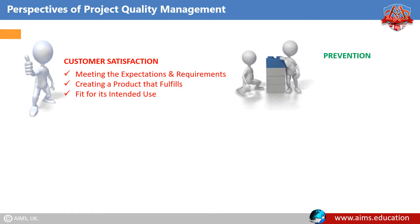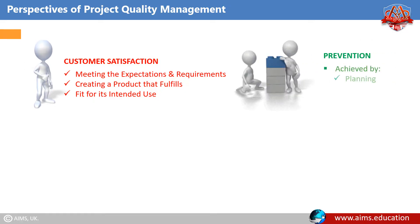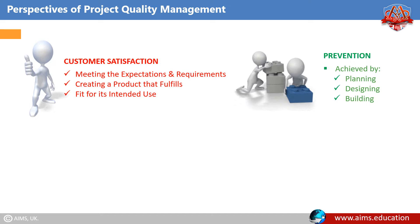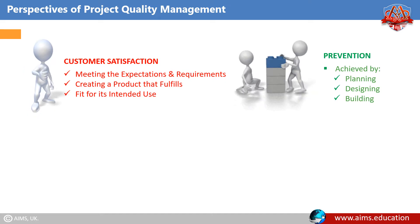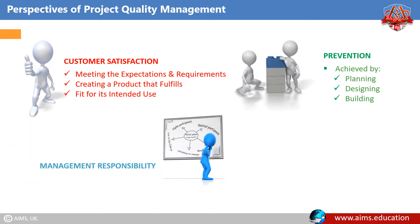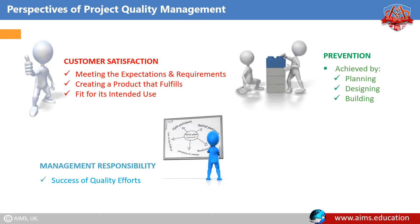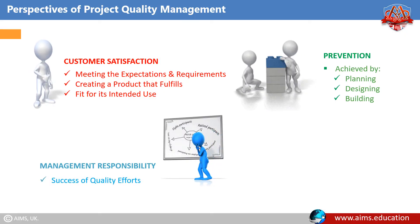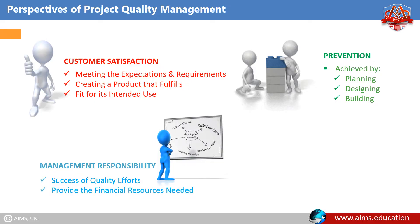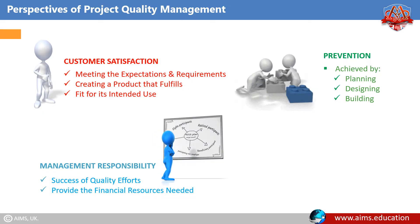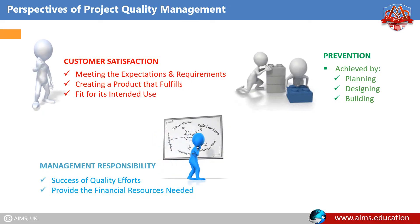Prevention: Quality is achieved by planning, designing, and building it into a product or process from the inception. Management Responsibility: The project team must ensure the success of quality efforts, and the organizational management must provide the financial resources needed for quality efforts to succeed.